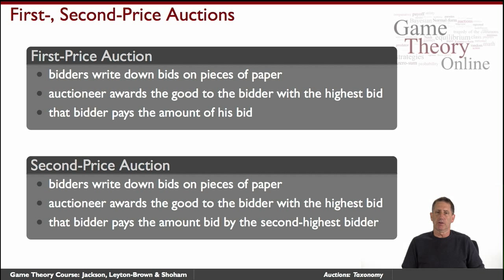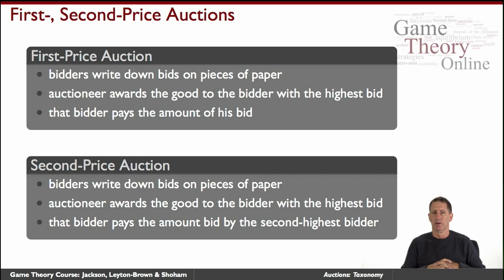Moving on to sealed bid auctions: these are called sealed bid auctions because, unlike the ones discussed so far, there's no open outcry. Everybody writes an offer — a bid — on a piece of paper, seals it in an envelope, and hands it to the auctioneer. The auctioneer opens all envelopes at the same time and decides the outcome. The most common is the first price sealed bid auction, where the auctioneer picks the bidder with the highest price as the winner and has them pay their price.